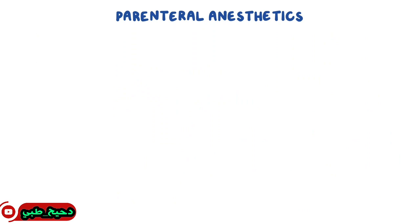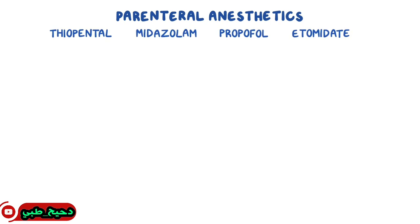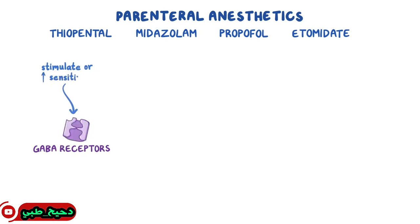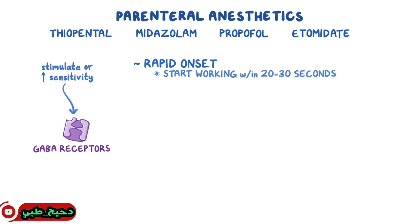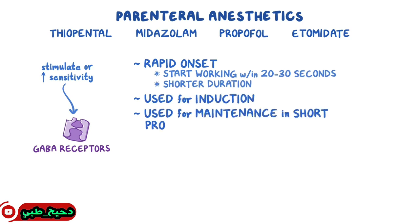Common parenteral anesthetics like thiopental, midazolam, propofol, and etomidate have similar properties as well as mechanisms of action, mainly stimulating GABA receptors or increasing their sensitivity to GABA. They all have rapid onset, which means they start working within 20-30 seconds, but tend to have a shorter duration. So they're commonly used for induction of anesthesia and maintenance in short procedures like tracheal intubation.